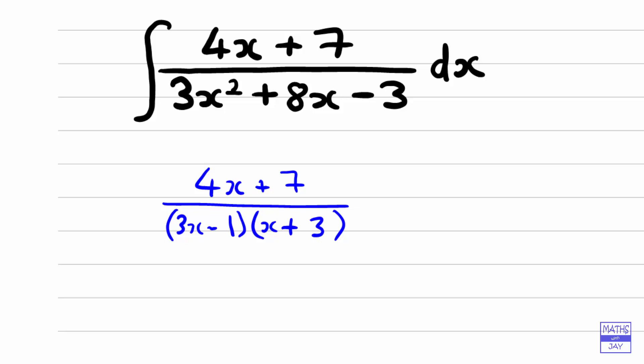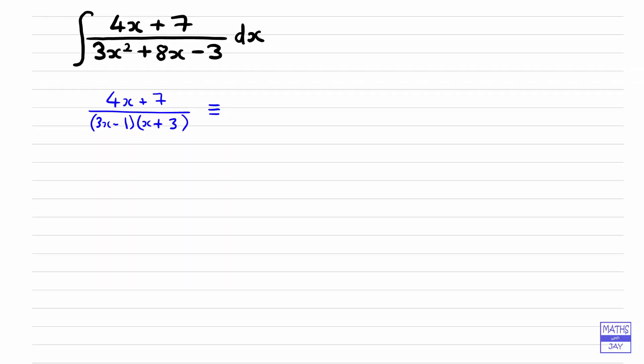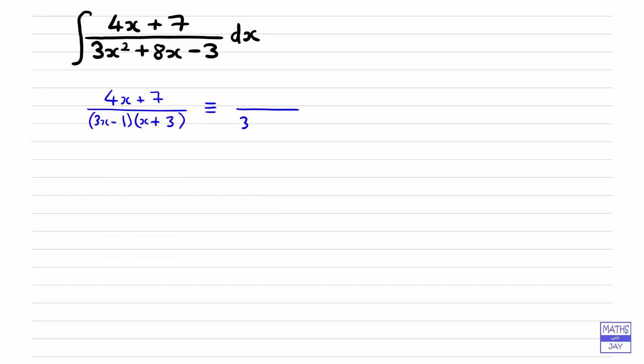Notice I'm leaving out the integral symbol at the moment. We just want to look at how we can replace this fraction by two separate fractions. So what we're looking at doing is finding two fractions that add up to this one fraction. So we've got an identically equal symbol there, and we're going to have something over 3x minus 1, so some number, and then some other number over x plus 3.